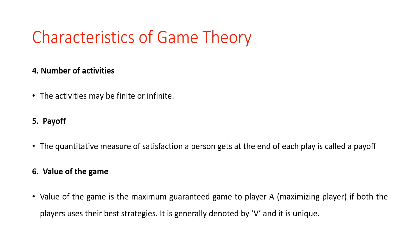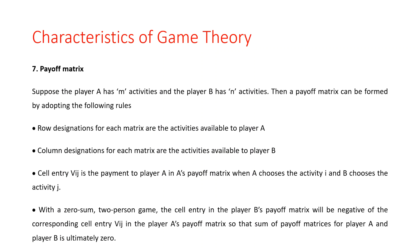These are the characteristics of the game. The last one is the payoff matrix. If we have to solve the two-person zero-sum game problem, we first require the payoff matrix, then we can find out the optimal strategy and then the value of the game. Suppose player A has m activities and player B has n activities, then the payoff matrix is m by n.